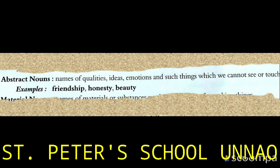Abstract noun — in simple words, it refers to things which we can feel but cannot see or touch. Names of qualities, ideas, emotions, and such things which we cannot see or touch are called abstract nouns.